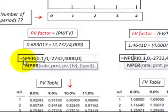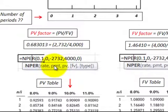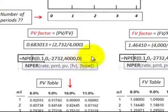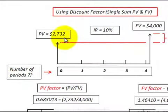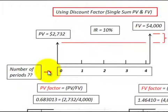In Excel, use the NPER function. Put in the 10% interest rate; payments are zero in this case. You also need to enter the present value and future value amounts. The type is set to zero for end-of-period payments. When solving these problems, you need to know three variables — present value, interest rate, and future value — and then you can calculate the number of periods.